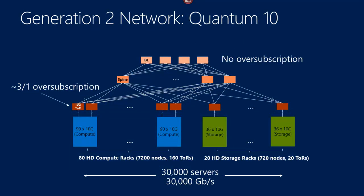This is the generation-two network in place in most of our data centers today. It's called a Clos network, after the guy who designed a fully connected network. There are multiple paths between any server in any rack to any other server in any other rack. With enough switches, there's no over-subscription at the top spine or border leaf layer, and redundancy is just built in. There's a little bit of over-subscription right at the top-of-rack routers — about 2.5 to 3-to-1. Contrast that with 120-to-1 from the previous design. This one scales to roughly 30,000 servers.